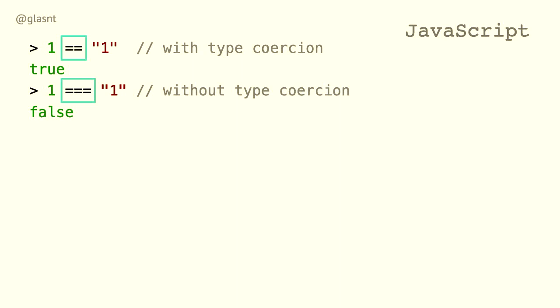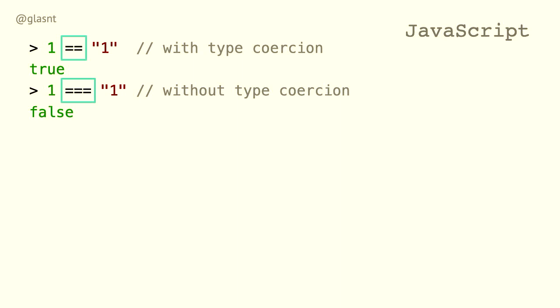The double equals implies type coercion by default — it will make both sides the same type. They added the triple equals to explicitly not do that, which is why you have two different types of equals. If you're going to be coding in JavaScript, you probably want to be using the triple equals all the time. And in this particular example, it's going to be a little bit complicated — about 30 seconds ago I hand-waved that this operator does either concatenation or adding together. Let's dive into that a little bit.